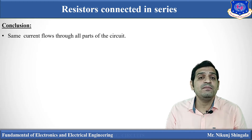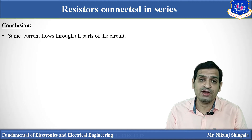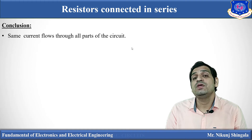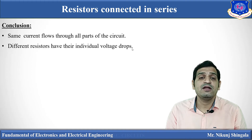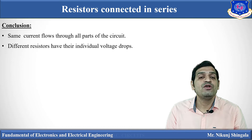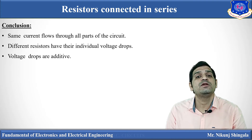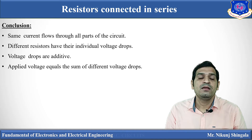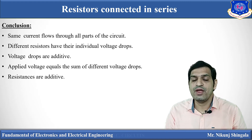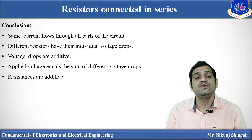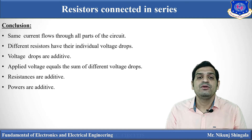The conclusions from the series circuit: the same current flows through all parts of the circuit. Different resistors have their individual voltage drops according to Ohm's Law — V1, V2, V3 — and voltage drops are additive: total voltage equals V1 plus V2 plus V3. The applied voltage equals the sum of the different voltage drops. Resistances are also additive, and powers are also additive.